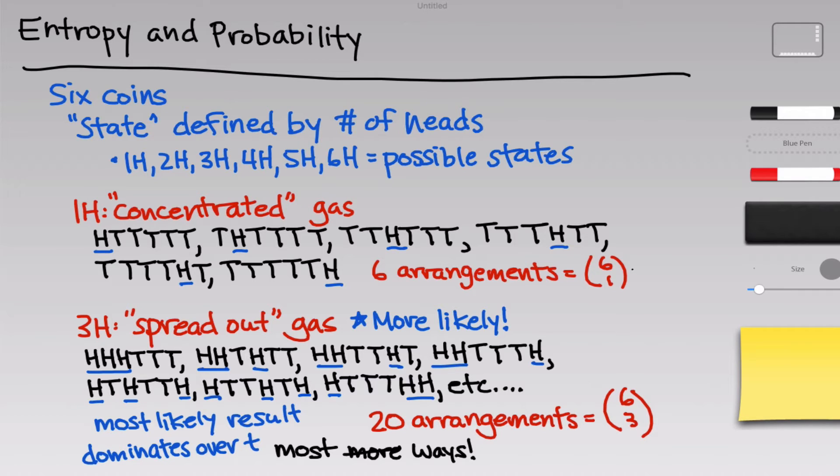These numbers six and 20, the number of ways to prepare the one head and three head states, have a special name that was coined by Boltzmann, W. You can think of W as the likelihood of a state. It's the number of distinct possible arrangements that produce that state. Boltzmann's great insight was that entropy is related to this W value. Specifically, the entropy S is equal to a constant k_B times the natural log of W. This constant k_B, which is called Boltzmann's constant, has units of joules per Kelvin, the units of entropy, and it's equal to 1.38 times 10 to the negative 23rd joules per Kelvin.